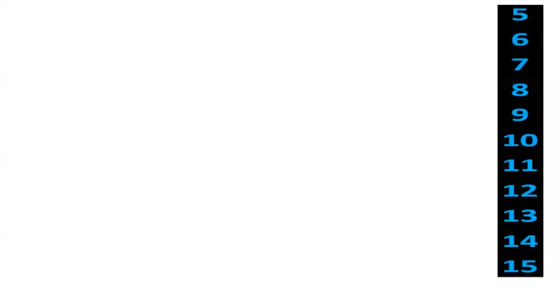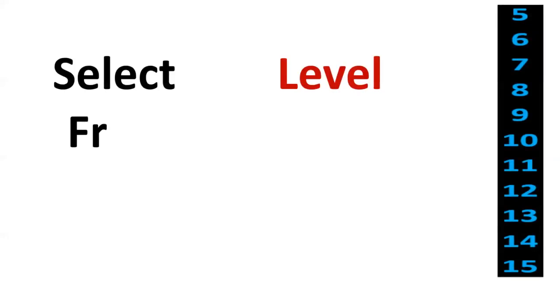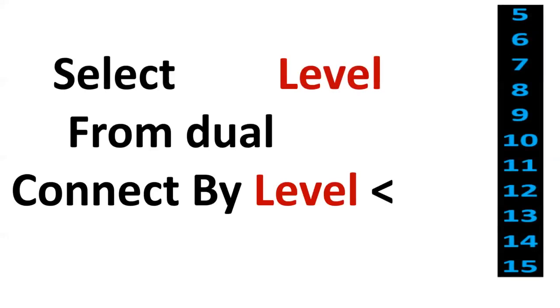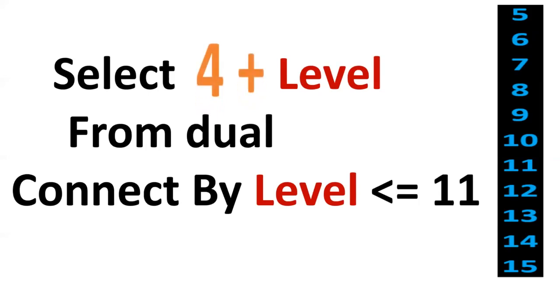Next one is to print 5 to 15 numbers — that is 11 numbers. By using CONNECT BY LEVEL we can achieve 1 to 11 numbers. But what we want is 5 to 15, so we need to add plus 4 to the level. The required output can be achieved using this query.